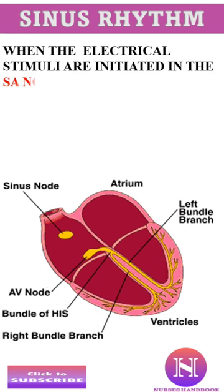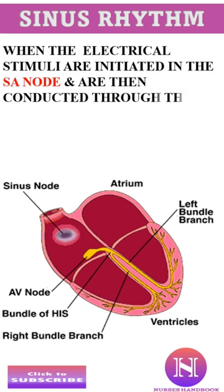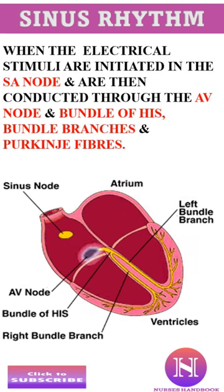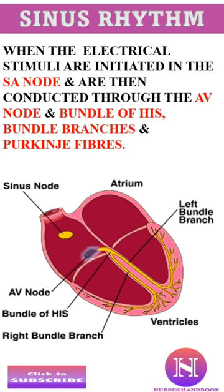Today let us see what is a sinus rhythm. Sinus rhythm is the name given to the normal rhythm of the heart, where the electrical stimuli begins at the SA node and then connects through the AV node, bundle of His, bundle branches, and the Purkinje fibers.